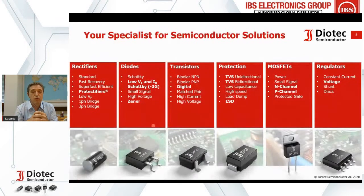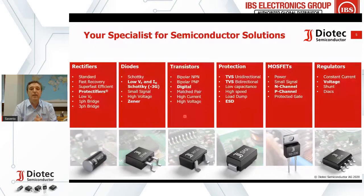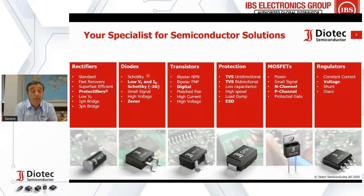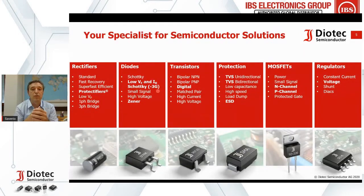We now show the six columns of our product portfolio covering those five market segments. Our history is in rectifiers and diodes — that is also where the company name comes from. Rectifiers include our Protectifiers trademark solution. In diodes, we have a huge range with very low VF (forward voltage) or very low IR (leakage current), which is essential for efficiency.